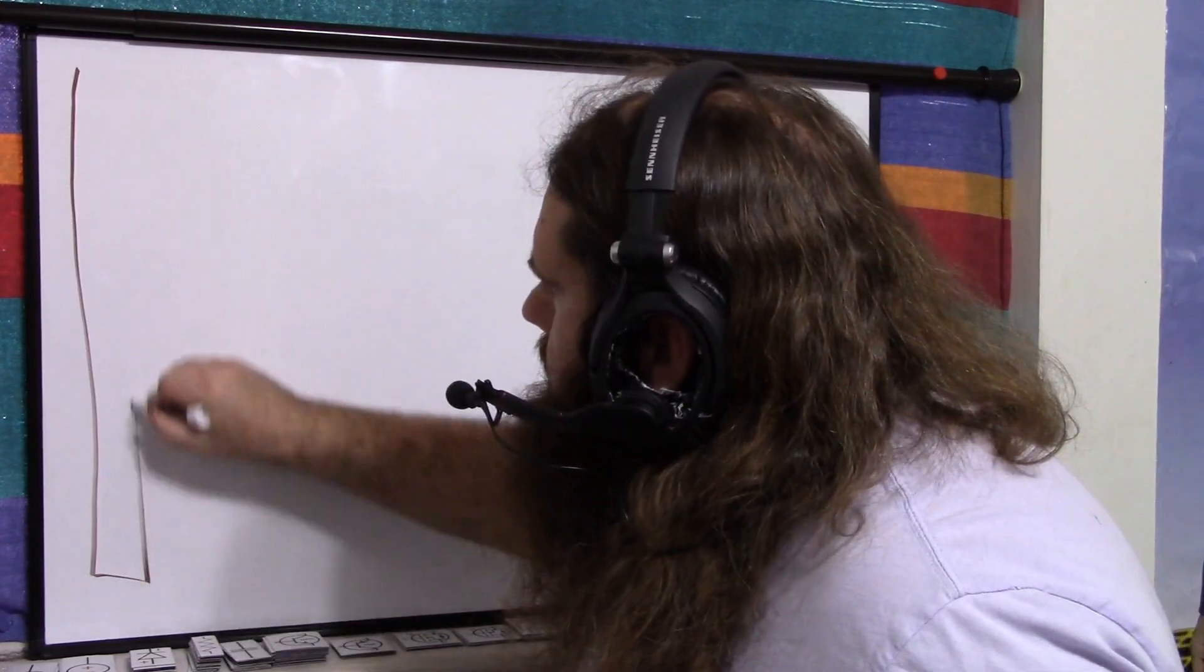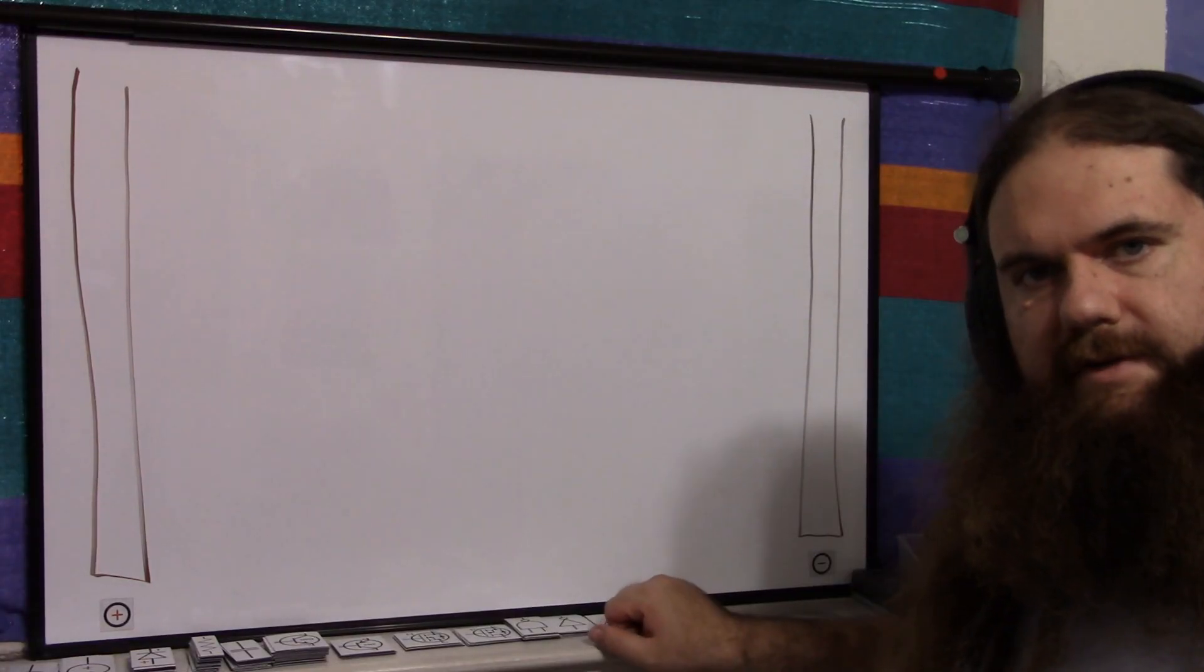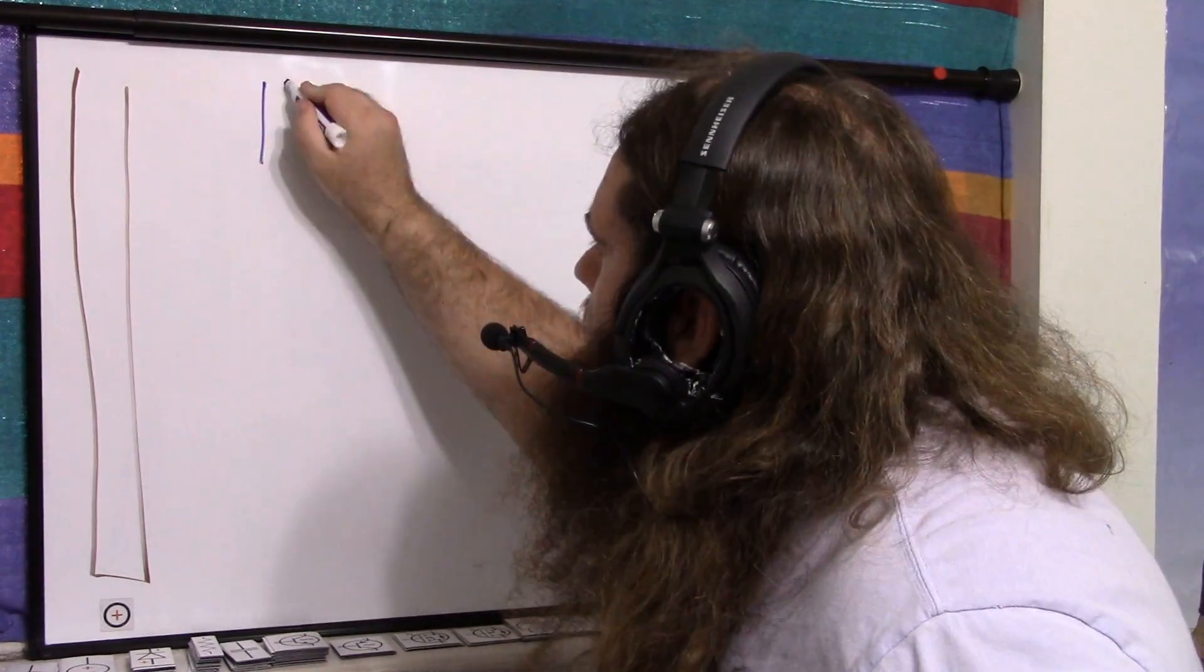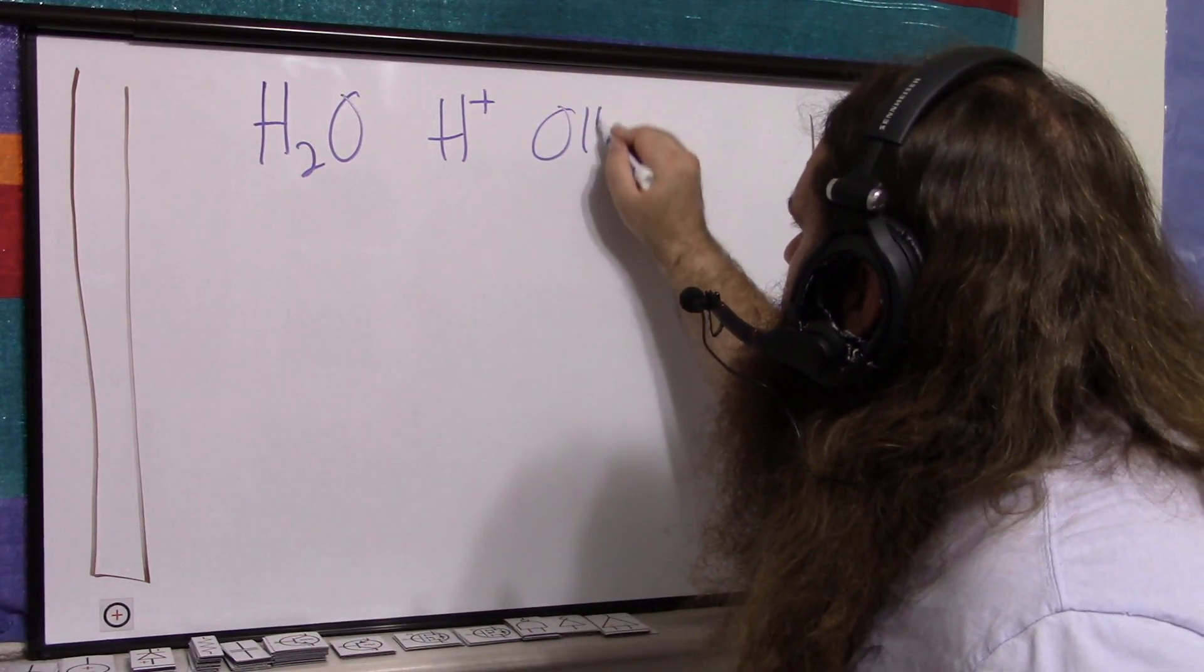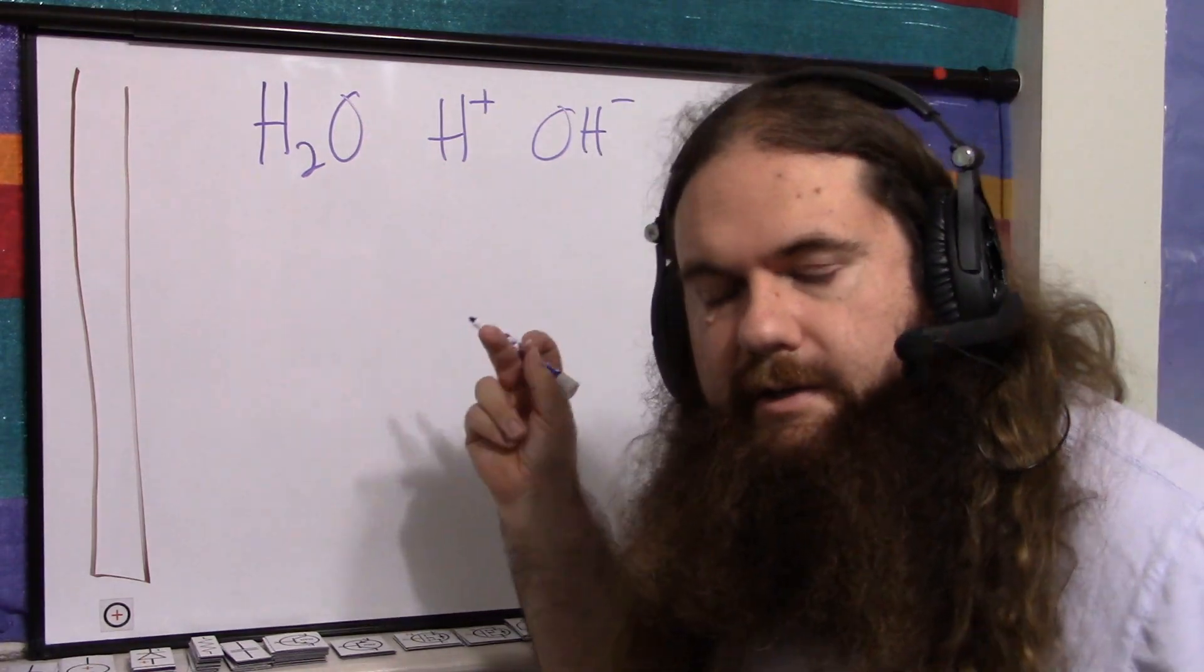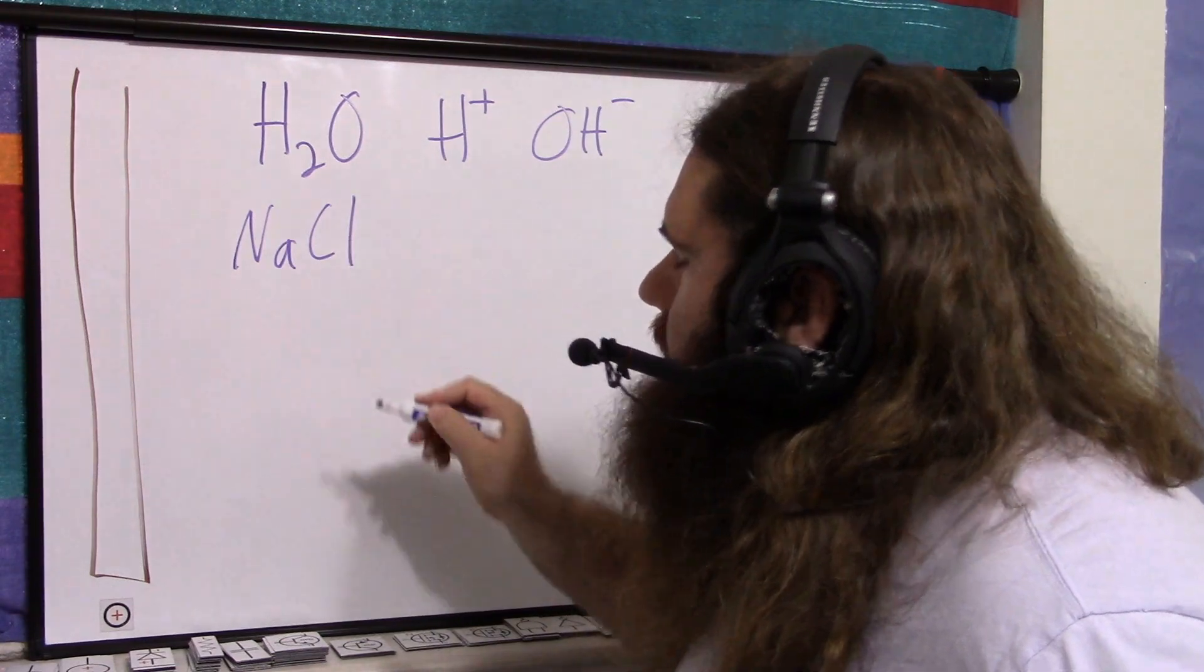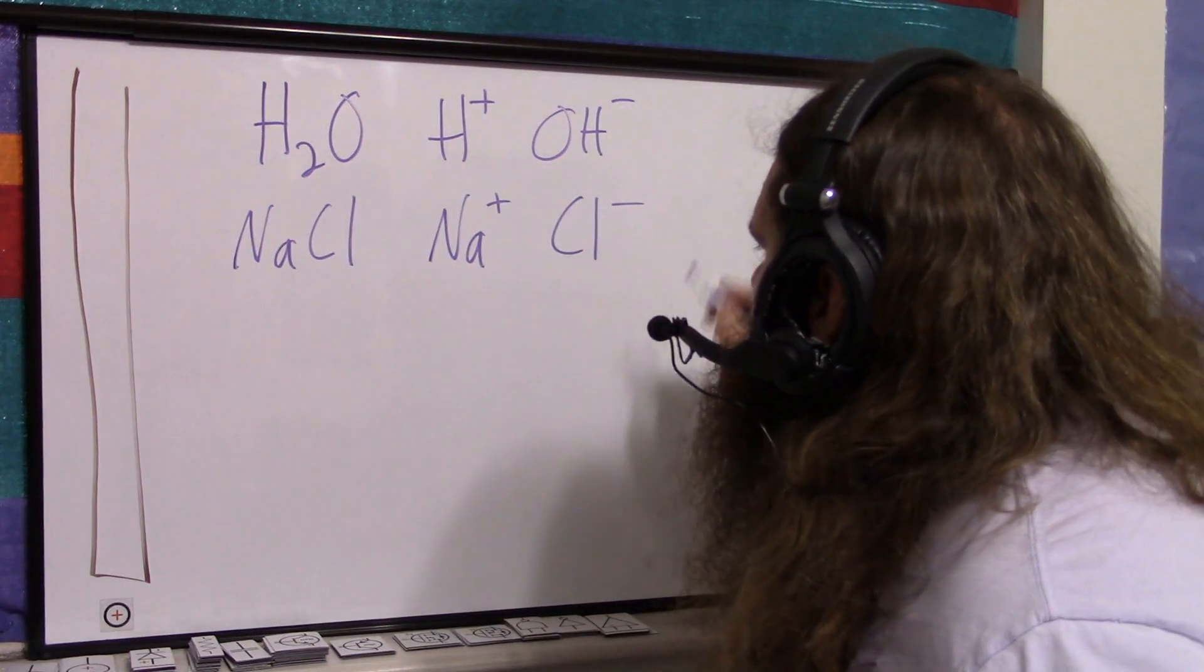It's exactly the same as regular electrolysis. The only difference is what the electrodes are made of. Two electrodes, a positive one and a negative one. The negative is the cathode. The positive is the anode. Same chemicals as before. We have H2O, which becomes hydrogen and hydroxide ions. We have NaCl, sodium chloride, salt, which becomes sodium plus and chlorine minus.